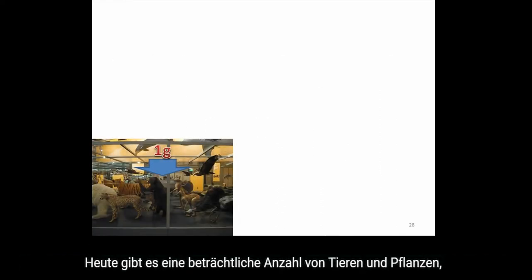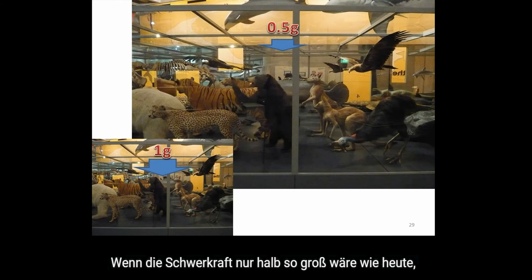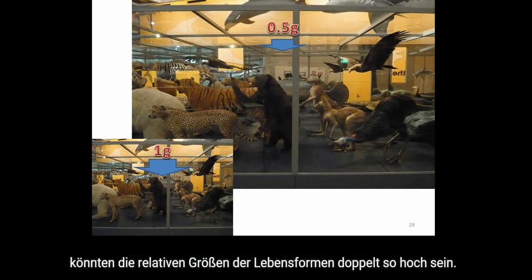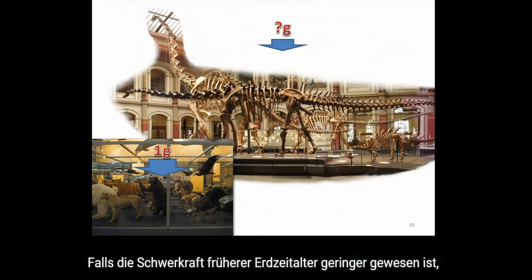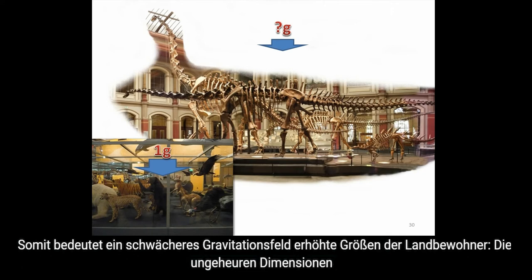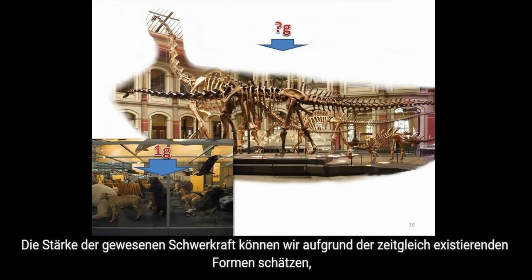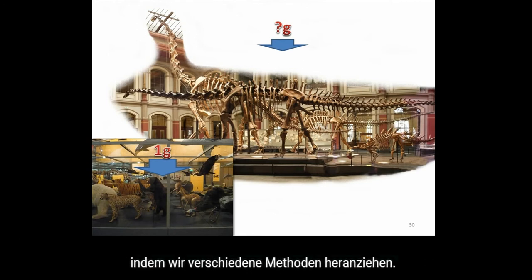Today, there is a whole range of life limited in scale because they live in our present gravity. If gravity was half its present value, the relative scale of life would be twice its present size. If gravity was less on the ancient Earth, we would expect life to be larger — and this is exactly what we see. A lower gravitational field would allow the scale of all land-based life to become larger, and this illustrates how the immense size of the largest dinosaurs would have been a natural result of reduced surface gravity on the ancient Earth.